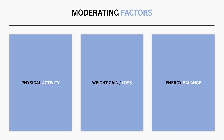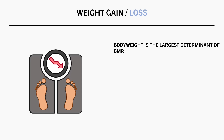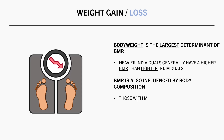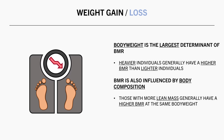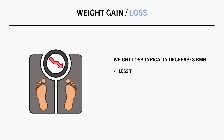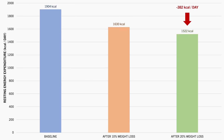Another factor influencing the components of energy expenditure is weight gain and weight loss. Our body weight is probably the single biggest determinant of our basal metabolic rate — heavier individuals reliably have a higher metabolic rate on average than lighter individuals. Body composition also plays a role: those carrying more lean mass will typically have a higher metabolic rate than someone with more body fat. So when we lose weight, this usually decreases our metabolic rate because we simply have less total tissue requiring less energy to sustain at rest. For example, this study found that resting energy expenditure decreased by around 380 calories per day in obese subjects who lost 20% of their initial body weight.